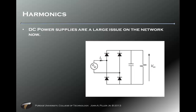We've increased the amount of electronics in our homes. Electronics run on DC, not AC generally speaking. For every electronic device you plug in the wall, you plug a DC power supply in, and they cause substantial harmonics. Examples include your TV, VCR, DVD player, stereo, phone charger, microwave, all your clocks, and your computers.